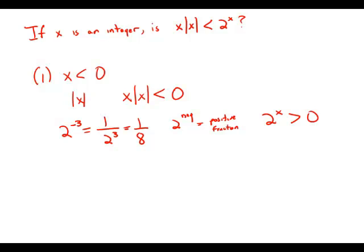If we know that x times absolute value of x is less than 0, and 2 to the x is greater than 0, then by transitivity of inequality, x times absolute value of x has to be less than 2 to the x. So this statement by itself is completely sufficient to answer the question.